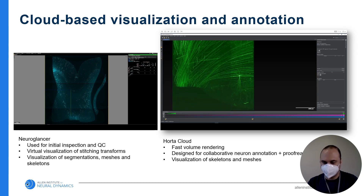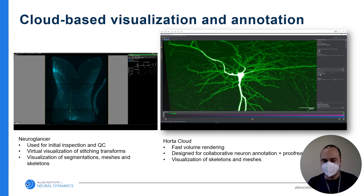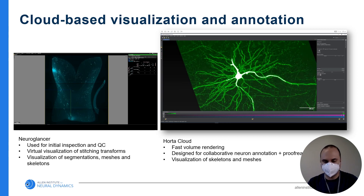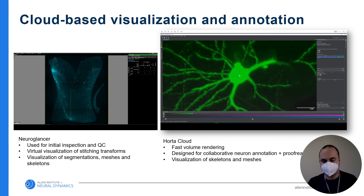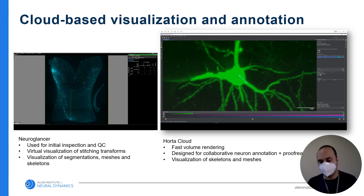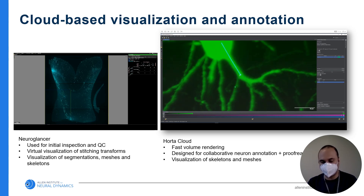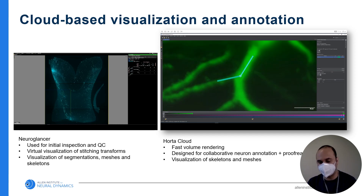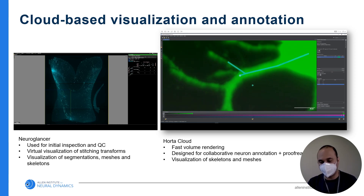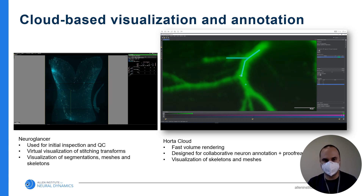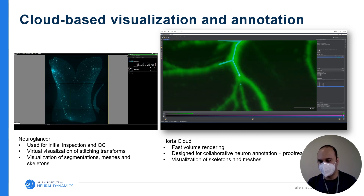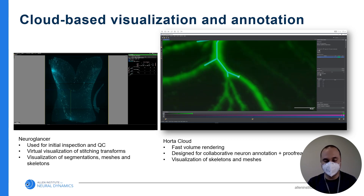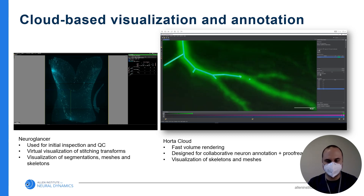Once the stitched volume is in the cloud, we can begin visualizing and annotating the data using several cloud-based tools. NeuroGlancer is a web-based viewer for volumetric data. It displays a 2D view with arbitrary slicing, which is useful for visualizing datasets right as they come off the microscope for initial inspection and quality control. We also use it to visualize stitching transformations on the fly without having to render out the full fused data. NeuroGlancer is also useful for viewing segmentation overlays on the raw data, as well as skeletons and brain meshes.